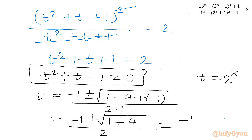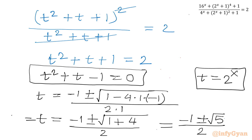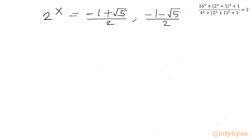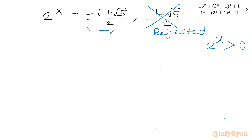Applying the quadratic formula: t = (-b ± √(b^2 - 4ac)) / 2a = (-1 ± √(1 + 4)) / 2 = (-1 ± √5) / 2. This gives two values. Since t = 2^x cannot be negative, we reject (-1 - √5)/2. So 2^x = (√5 - 1) / 2.